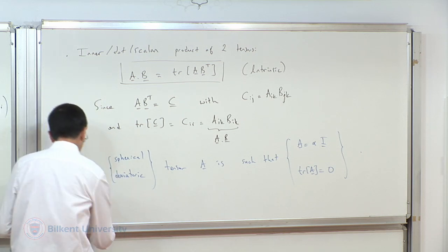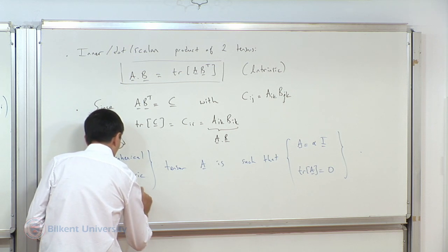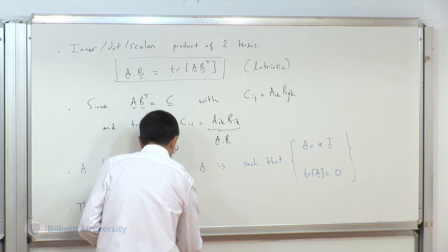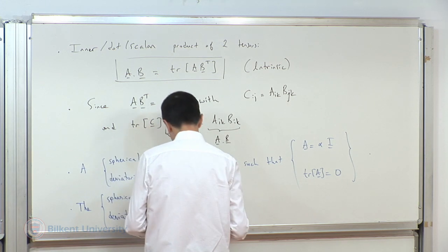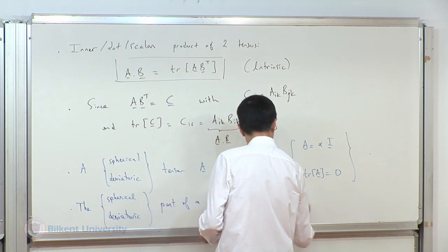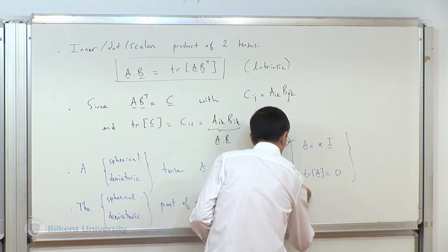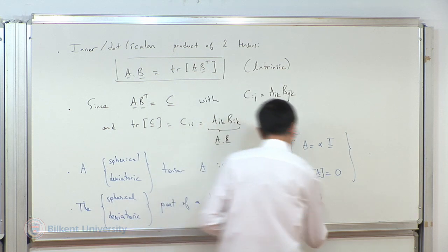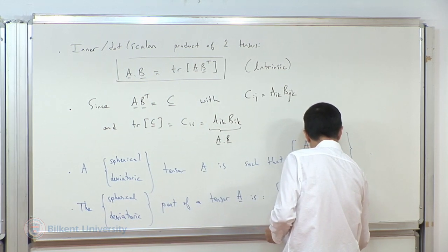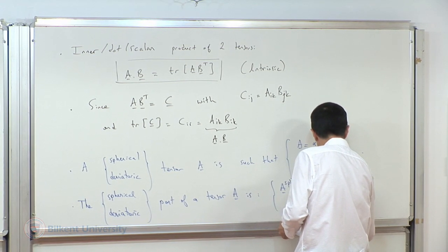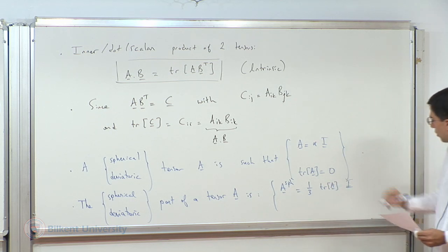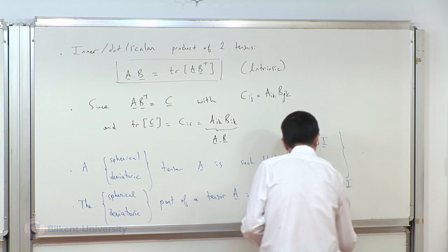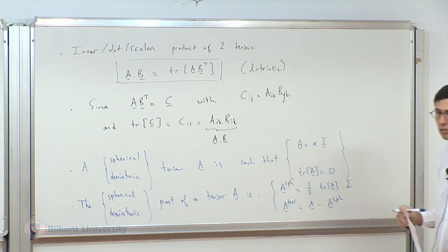Now you can define the spherical and deviatoric parts of a tensor. The spherical part is one-third times the trace of A times the identity. The deviatoric part is simply the tensor itself minus the spherical part.